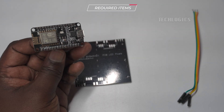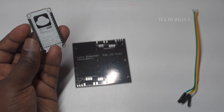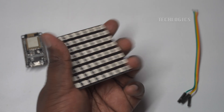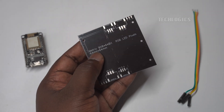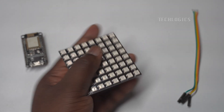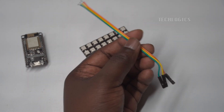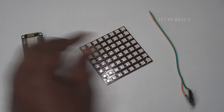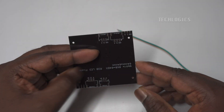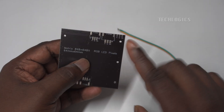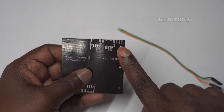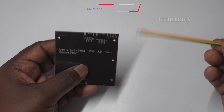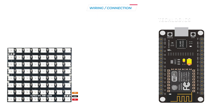For this project, you'll need a few essential components to create a vibrant, animated text display. An ESP8266 board, like the NodeMCU or Wemos D1 Mini, will act as the primary controller, managing animations and sending commands to the LEDs. The WS2812B 8x8 LED matrix panel will display colorful, scrolling, and flashing text, with each LED individually addressable for various effects. Finally, jumper wires will connect the ESP8266's data, power, and ground to the LED matrix.